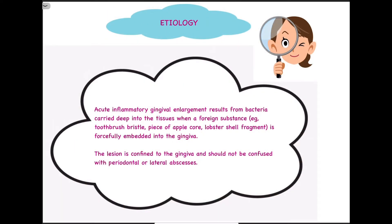Talking about the etiology or cause of gingival abscess: it is a type of acute inflammatory gingival enlargement that results basically because of a bacterial infection. This bacterial infection is carried deep into the tissues whenever a foreign substance — for example, a toothbrush bristle or an edible food item like a piece of apple or a lobster shell fragment — is forcefully embedded into the gingiva. Via these things, bacteria travel deep into the gingival tissues, resulting in formation of a gingival abscess. Our body naturally tries to ward off that infection, resulting in accumulation of WBCs, neutrophils, and other products of the inflammatory reaction, which results in formation of pus — referred to as the gingival abscess.